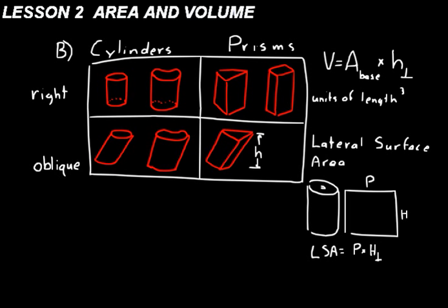A lot of times you'll be asked to find the total surface area of a prism or cylinder. Remember that you have two bases — a top and a bottom. So the total surface area, TSA, equals two times the area of the base plus the lateral surface area. That gives you the total surface area of the object.